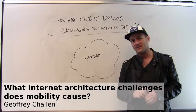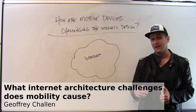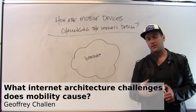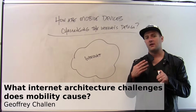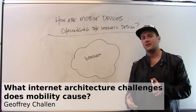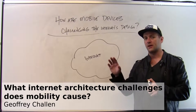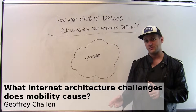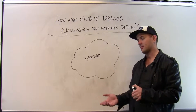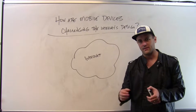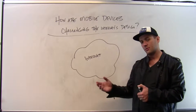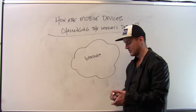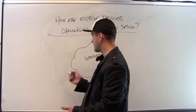As more and more devices that connect to the Internet are mobile devices, those characteristics are starting to challenge aspects of the Internet's original architecture. Let me give you some examples. Some of these are things that we've talked about in the past, but they're still good to keep in mind.